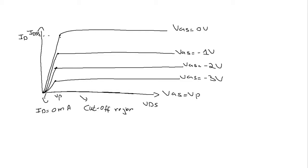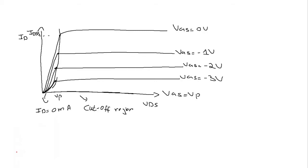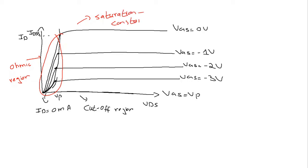Now, the pinch-off voltage increases in a manner such that the pinch-off locus makes a parabolic shape. If you combine the locus of all these points you will see a parabolic shape. This region to the left is the ohmic region, and this region to the right is the saturation region, also called the constant current region.